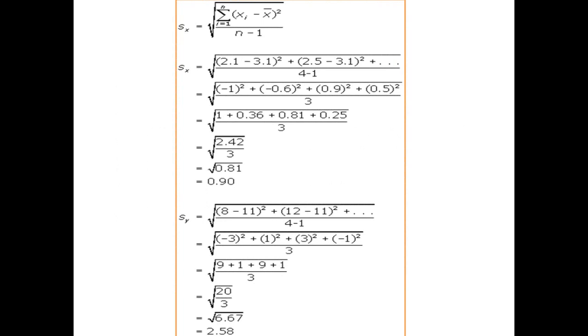S of x is equal to the square root of the summation of (xi minus x-bar) squared, upon n minus 1. Here we are using n minus 1 in the denominator because this is a sample statistic and not a population one.